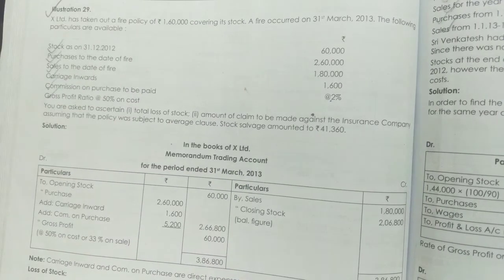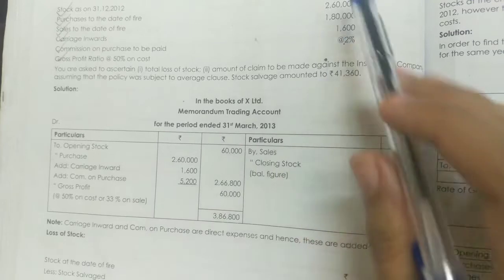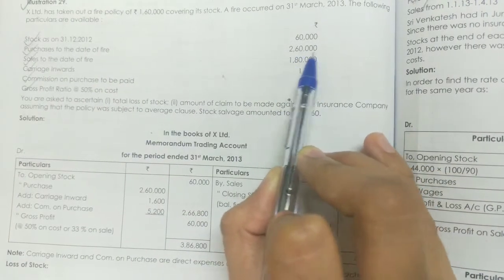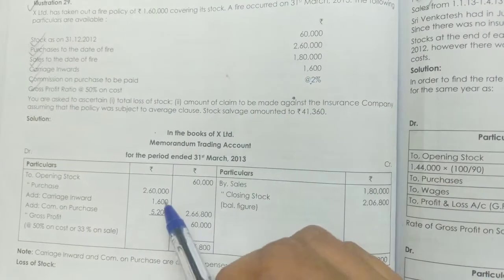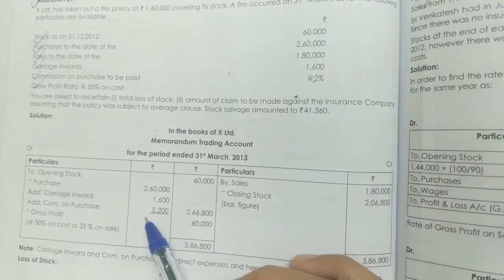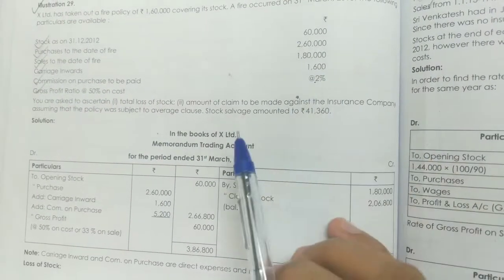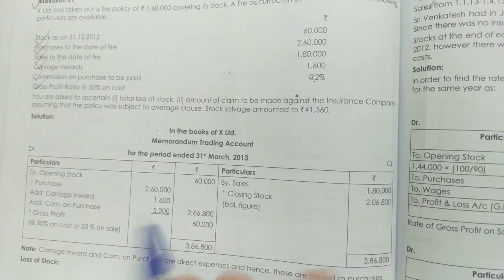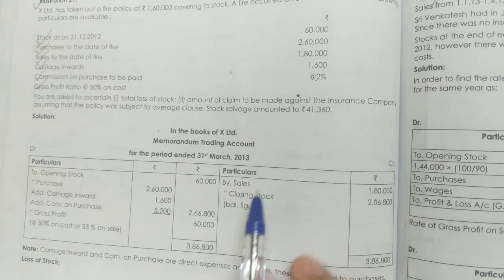Now we are preparing the memorandum trading account. The very first thing we enter is the opening stock: 60,000. The next is purchases, given directly: 2,60,000. Next, carriage inwards as a direct expense: 1,600. Then commission — we found the amount as 5,200, that is 2,60,000 × 2%, because the commission is on purchases. We also write down the sales, given as 1,80,000. To find the closing stock as the balancing figure, we need to know the gross profit amount.